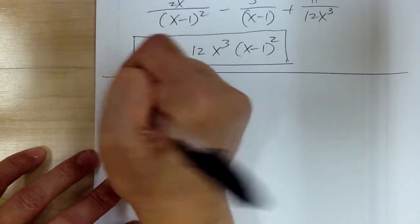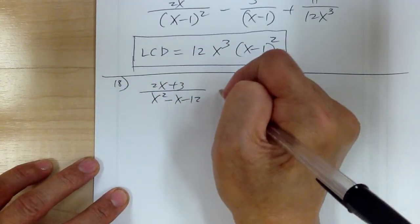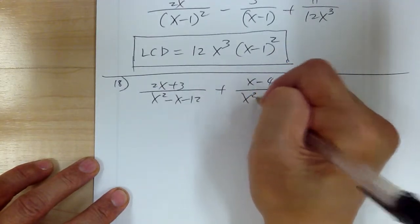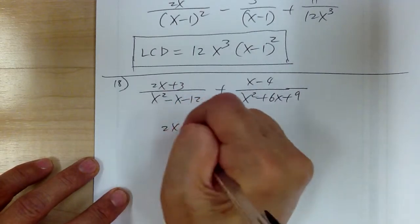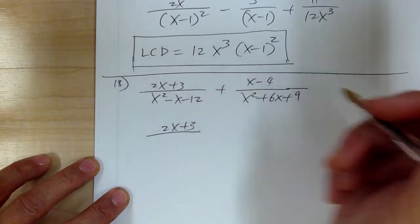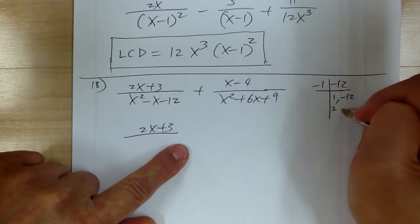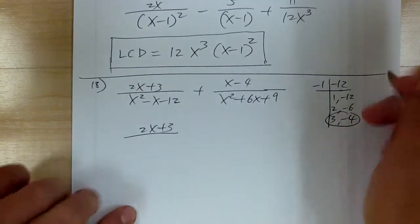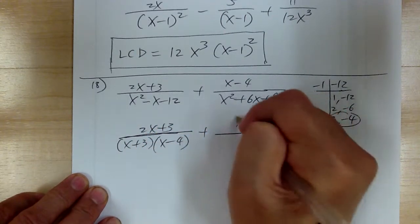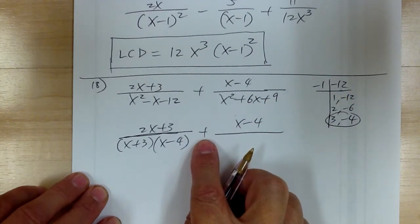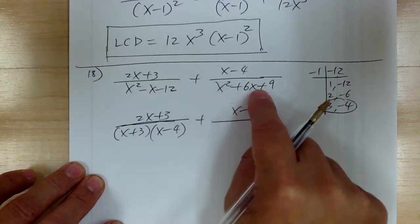Let's go to number 18. You have 2x plus 3 over x squared minus x minus 12, plus x minus 4 over x squared plus 6x plus 9. Factor the denominators — don't do anything with the top. For x squared minus x minus 12: step 1, common factor — cannot. Step 2, perfect square — cannot. So go to master product: you need negative 1 and negative 12, giving pairs like 3 and negative 4. So it factors to x plus 3, x minus 4. Do not cancel anything out — this is addition, not multiplication.